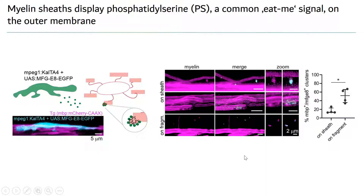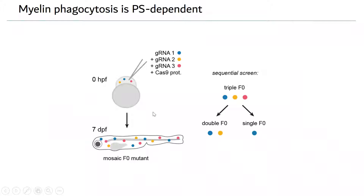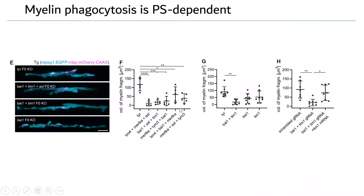To test whether myelin phagocytosis is PS-dependent, we knocked out PS receptors in combination — in pools of three, two, or single receptors — since there are at least 10 different PS receptors including MERTK, AXL, TYRO3, TIM-1, and TIM-4. Knocking out three PS receptors expressed in microglia led to a reduction of myelin phagocytosis. We could also rescue the phenotype by restoring a single PS receptor.